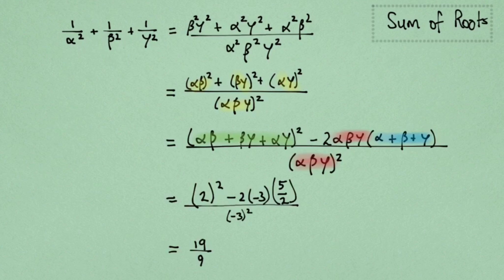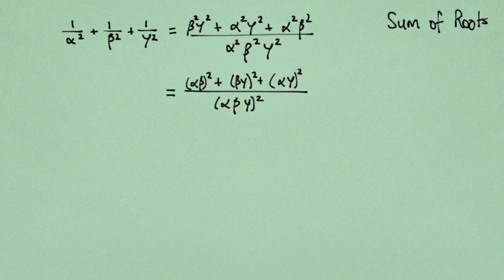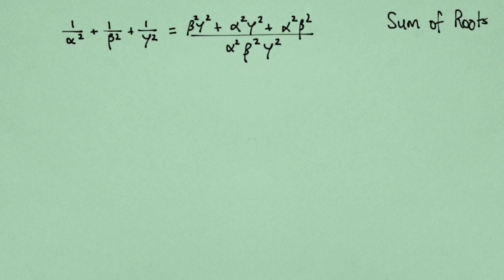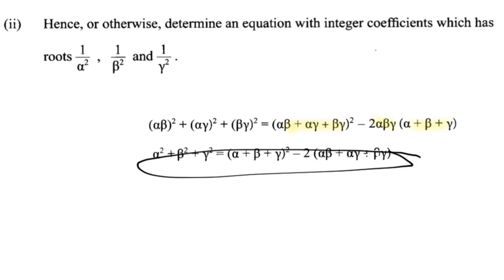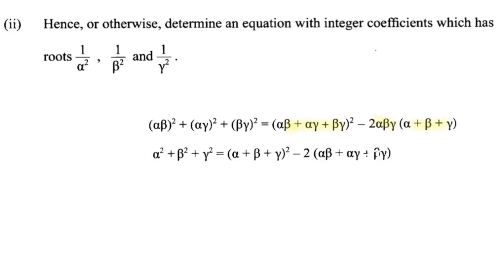They actually gave us that — so nice of them! It's right here. So this substitution is ideal. It's beautiful for us because we know these values from before.